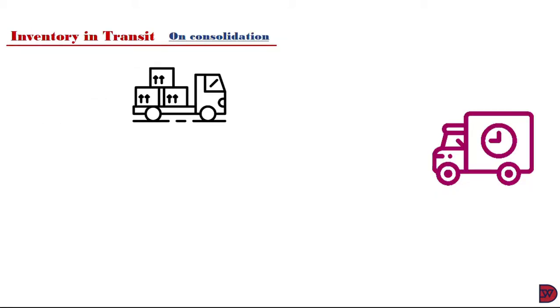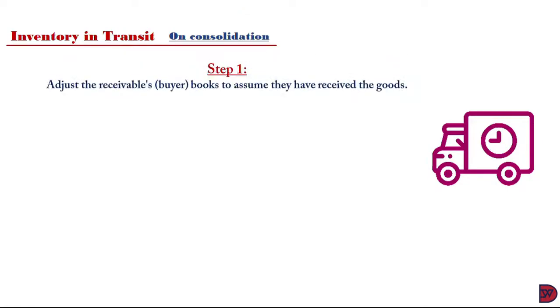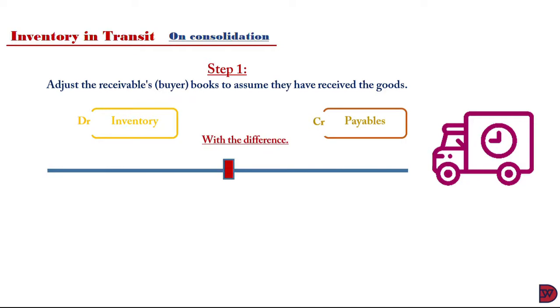In the inventory in transit, the goods are dispatched by the seller hence records as part of its receivables but the buyer is yet to receive it by the time of the preparation of the financial statement and presents no record of it in its inventory and does not charge as payable. To remedy this situation, first, we adjust the receivables of the buyer's books to assume that they have received the goods. We do so by debiting the inventory for the buyer by increasing the inventory, then we credit the payables with the difference. Once that has been done and we have the same balances for payables and receivables, we proceed to remove the intragroup trade receivables and payables.